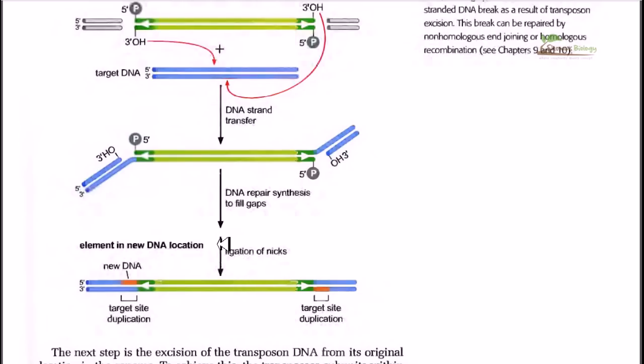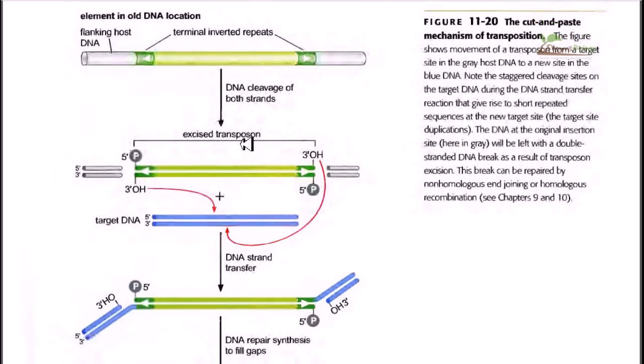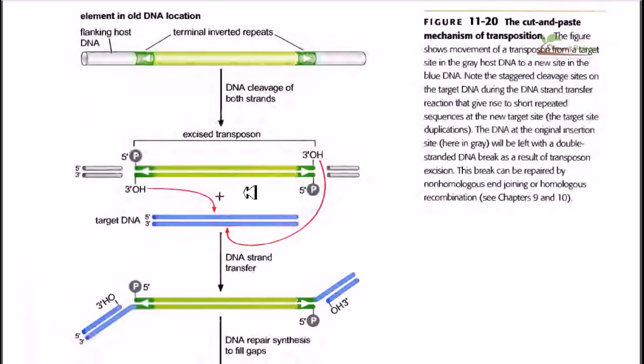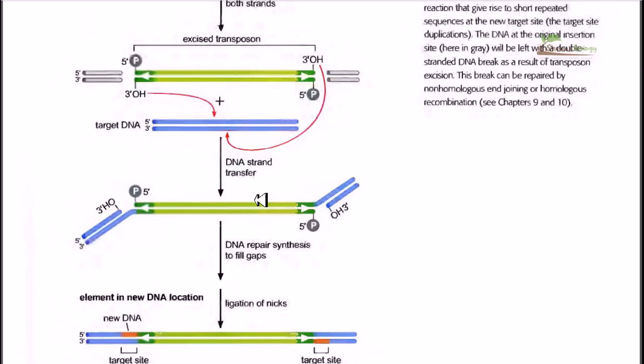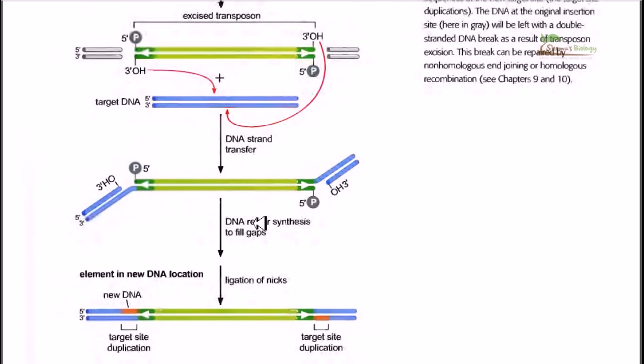This is how transposition happens via the cut and paste machinery. We call it cut and paste because we cut the transposon from the donor cell and incorporate it into the target DNA. I hope this helps. Thank you.